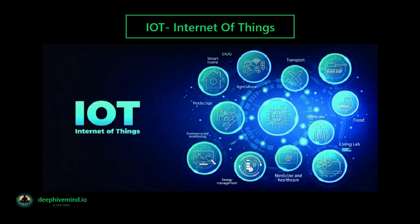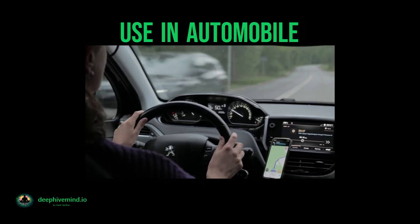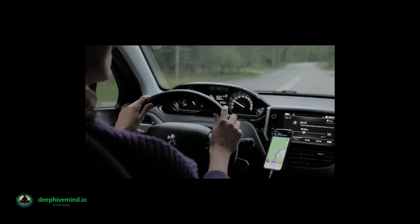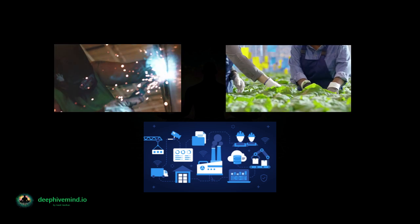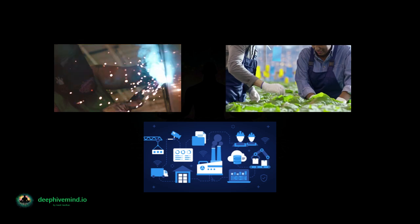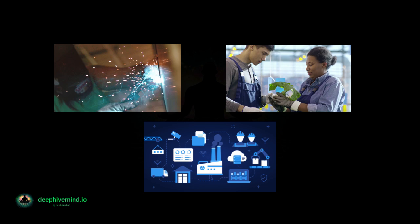A thing in the Internet of Things can be a person with a heart monitor implant, a farm animal with a biochip transponder, an automobile with built-in sensors to alert the driver when tire pressure is low, or any other object that can be assigned an IP address and transfer data over a network. Organizations across industries are using IoT to operate more efficiently, better understand customers, improve decision-making, and increase business value.